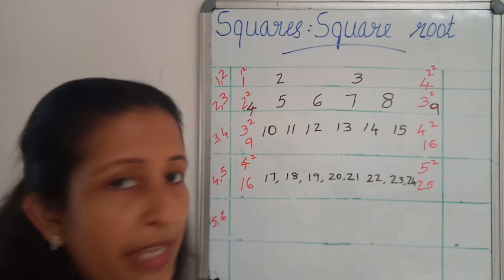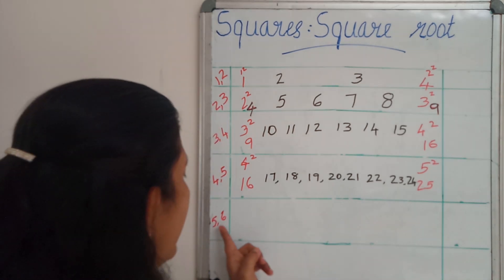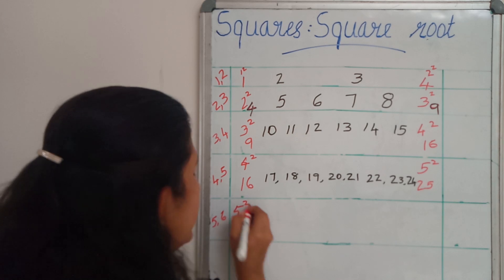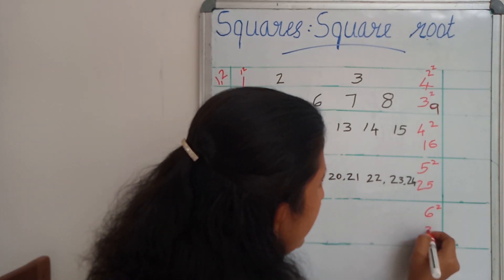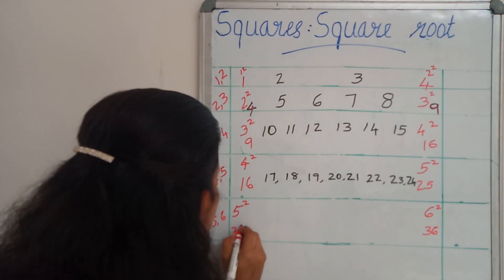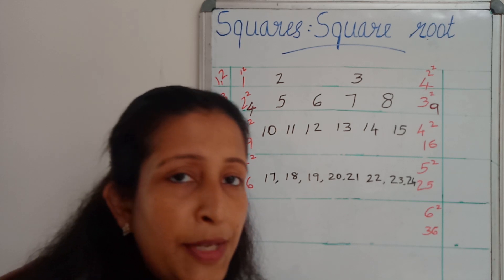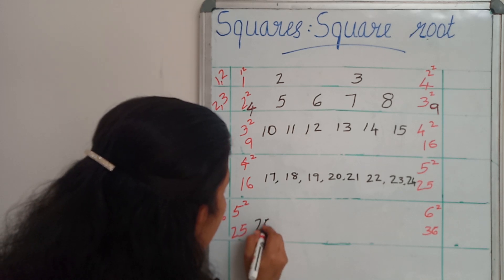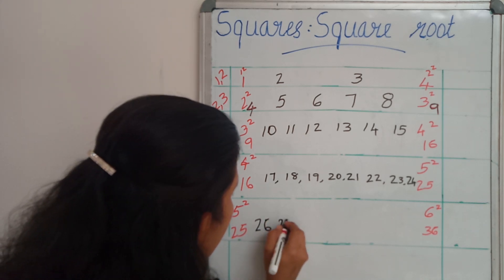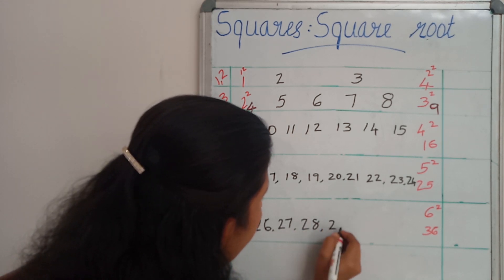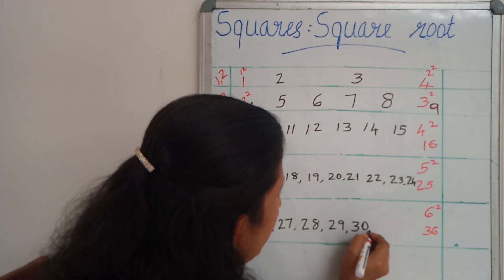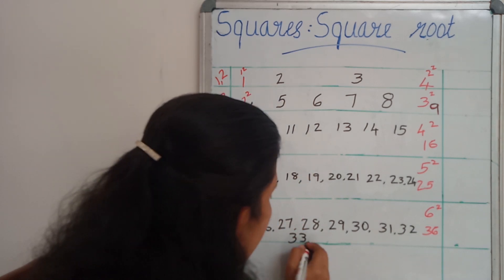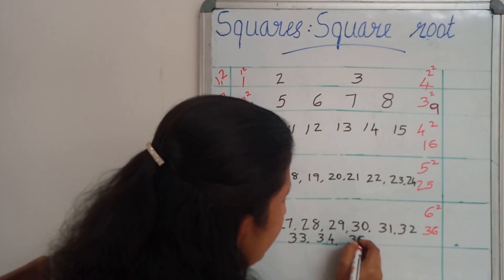Next, taking the consecutive natural numbers as 5 and 6. Then 5 square, then 6 square — 25 and 36. I am going to write down all the numbers in between 25 and 36: 26, 27, 28, 29, 30, 31, 32, 33, 34, 35.